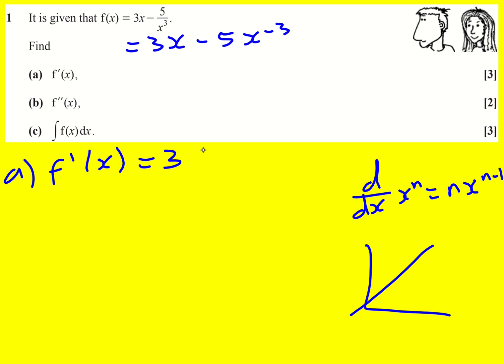Here I'm going to do minus 5 times minus 3x to the minus 4. I bring that minus 3 down, I times it by the minus 5, and that's going to give me plus 15x to the minus 4.